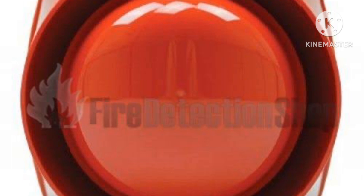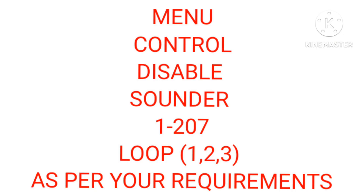To disable sounders in the individual panel, first go to Menu, then Control, then Disable, then Sounders. Then enter the parameters — 1, 2, and 207 — then select the loop. Put in whichever loop is required, for example loop 1 or 2.